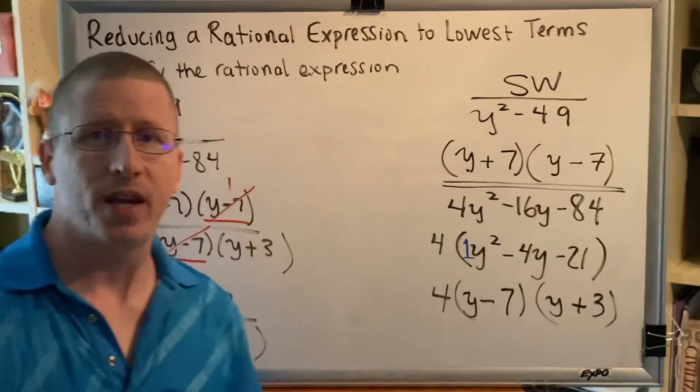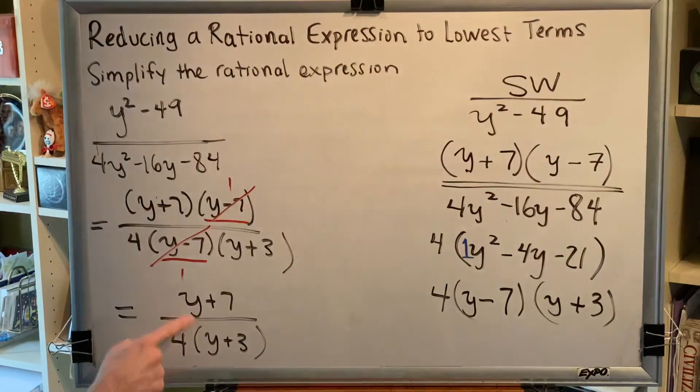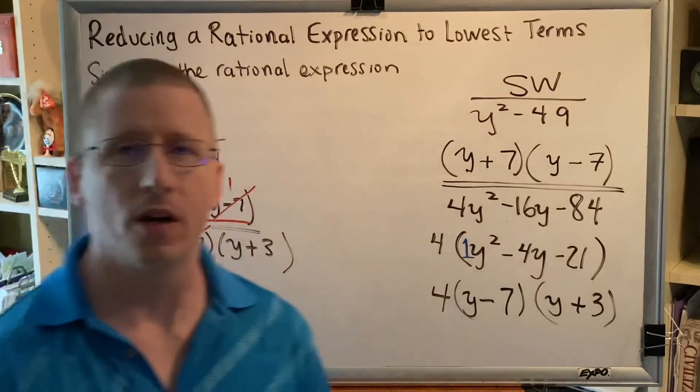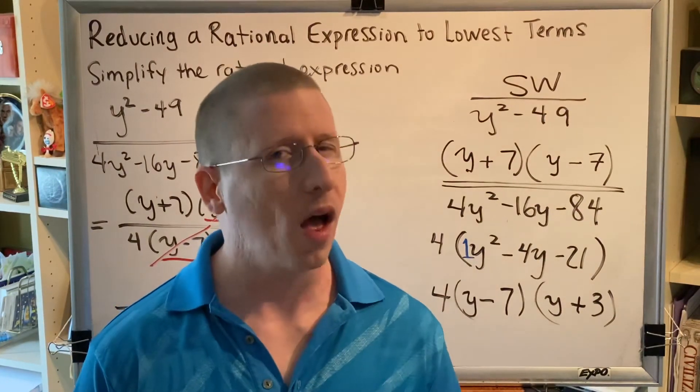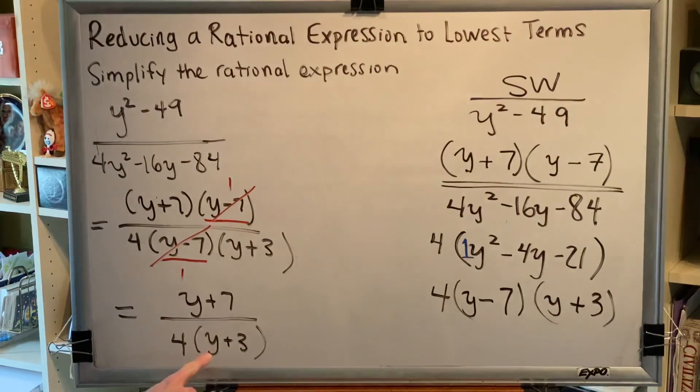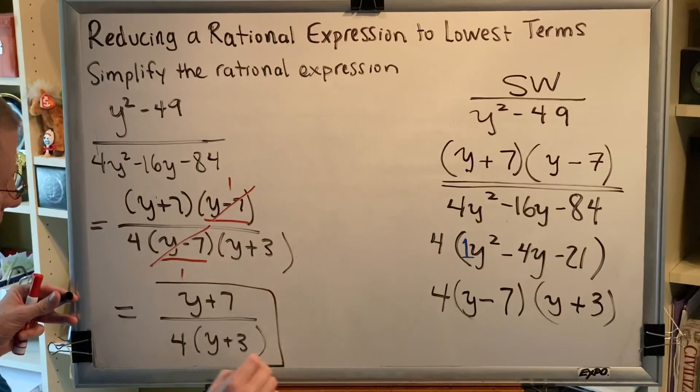Now, the most common mistake that students make with a problem like this is that they try to now cancel this y with this y. But that can't be done. And the reason why is because those y's are not factors. Remember, factors are things that are being multiplied, not added or subtracted. This y is clearly being added. And this y is clearly being added. And for that reason, these y's cannot be canceled. That makes this our final answer.